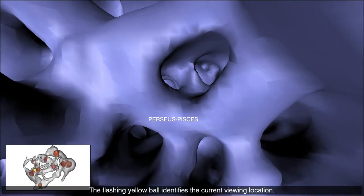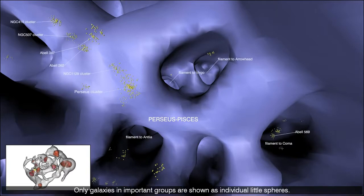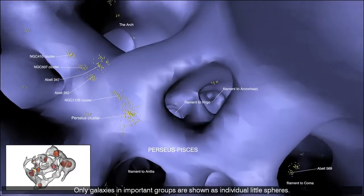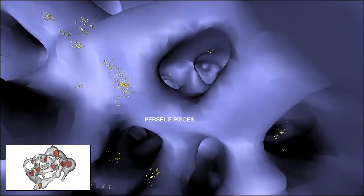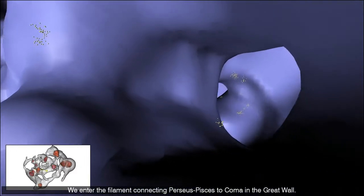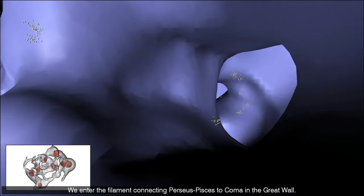The flashing yellow ball identifies the current viewing location. Only galaxies in important groups are shown as individual little spheres. We enter the filament connecting Perseus Pisces to Coma in the Great Wall.